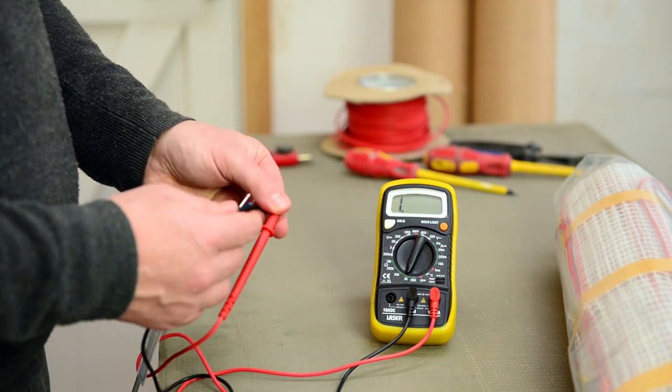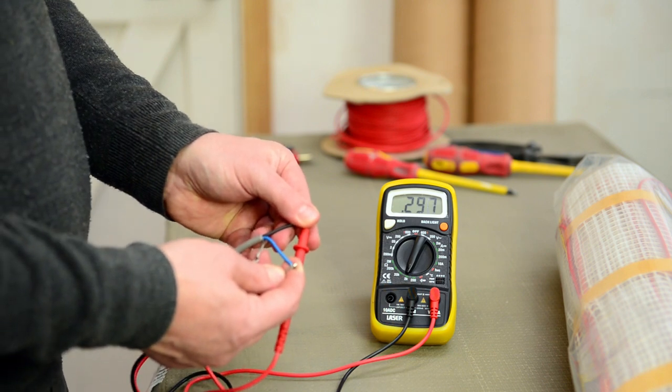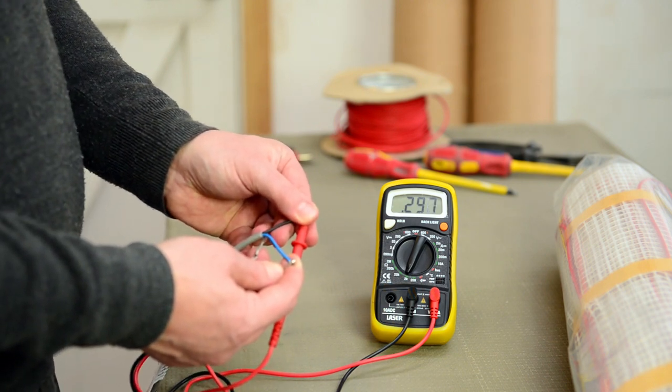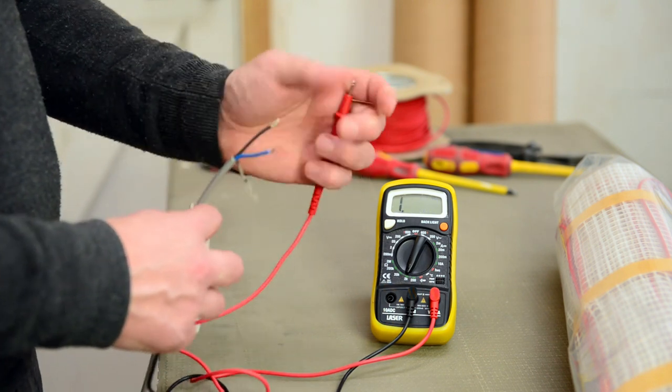Check the black cable and the neutral, then the earth. This gives us our ohms reading: 297, 296, which we can check on our label.